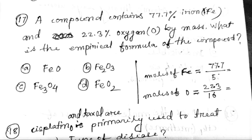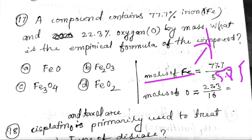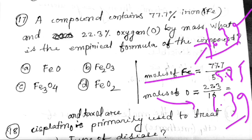The compound contains a certain percentage of iron and a certain percentage of oxygen by mass. What is the empirical formula of the compound? The moles of iron are calculated using 77.7 iron divided by 55.85. The oxygen ratio comes out to 1:1, giving the empirical formula iron oxide — FeO.